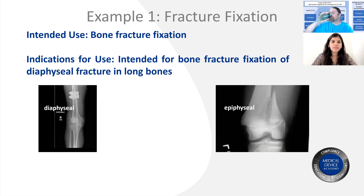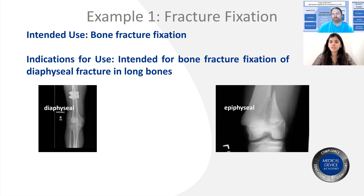As Rob explained in the previous slides, let's move on to one of the examples. One example we have taken is for fracture fixation, from the FDA guidance. The intended use mentioned here is 'bone fracture fixation.' You can see they have not mentioned the location where it will be used, the environment of use, or whether it will be sterile or non-sterile. They've simply mentioned that it's going to be used for fracture fixation.